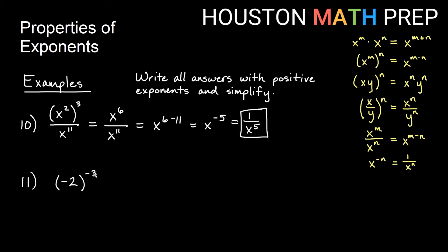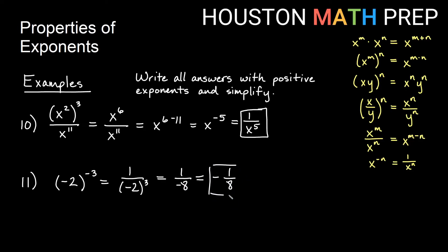For negative 2 to the negative 3: first handle the negative exponent by taking the reciprocal, giving 1 over negative 2 to the third. Now cube negative 2: negative 2 times negative 2 times negative 2 equals negative 8. So the answer is 1 over negative 8, or more conventionally, negative one-eighth.